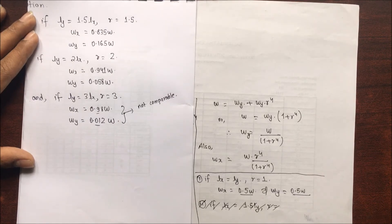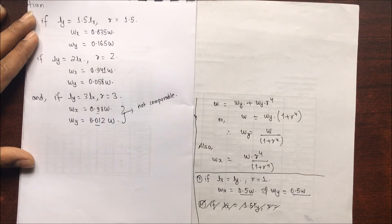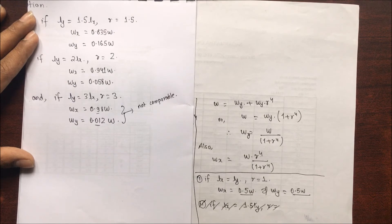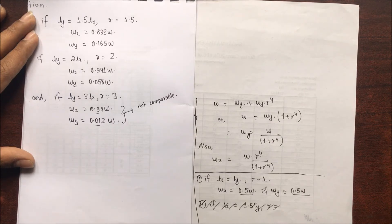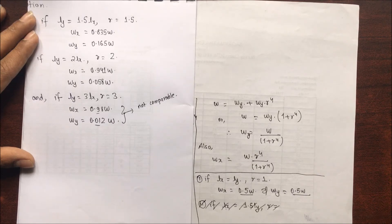So we conclude: if the length ratio in x and y becomes greater, the load distribution in x and y axes becomes insignificant. As seen when Ly = 3 × Lx, the load distribution in the y-axis is only 1.2%, while in the x-axis it is 98% of the total load. Therefore, load distribution will be maximum in the shorter side.